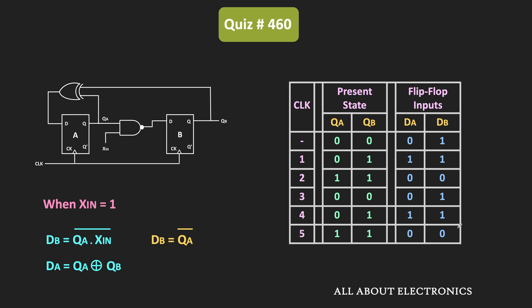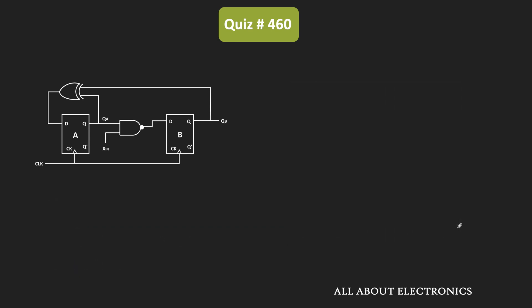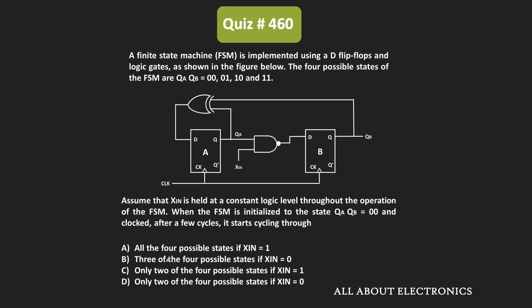As you can see from the table, when input xin equals 1, then after a few clock pulses the FSM will go through three different states: 0,0 and 0,1 and 1,1. So for the given finite state machine, when xin equals 1 it goes through three different states, and when xin equals 0 it goes through two different states. Based on these facts, out of the four given options, only option D is the correct answer.